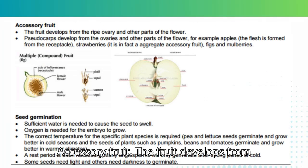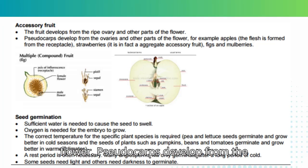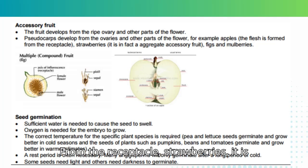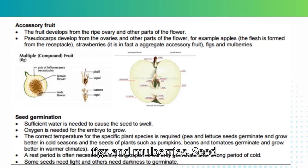Accessory fruit: the fruit develops from the ripe ovary and other parts of the flower. Pseudocarps develop from the ovaries and other parts of the flower — for example apples, where the flesh is formed from the receptacle; strawberries, which are in fact aggregate accessory fruits; and figs and mulberries.